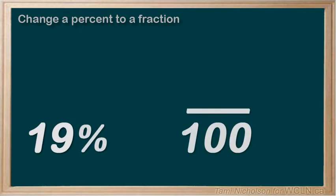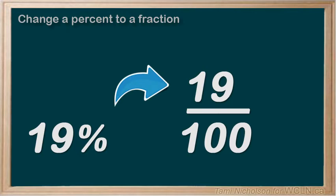Here we have 19%. Put 19 over 100. You've got 19 one-hundreds. You're done!